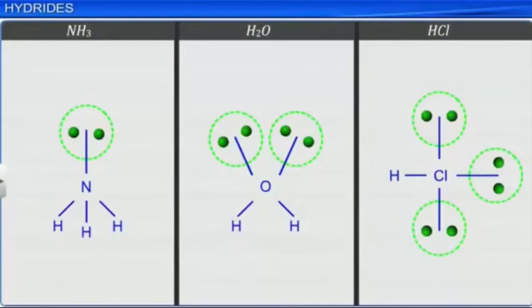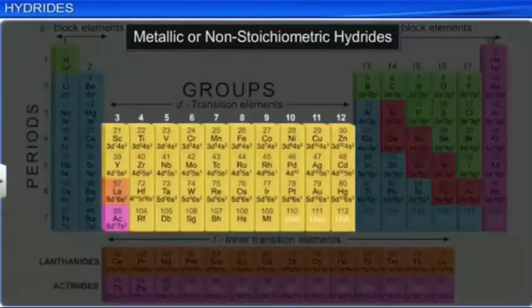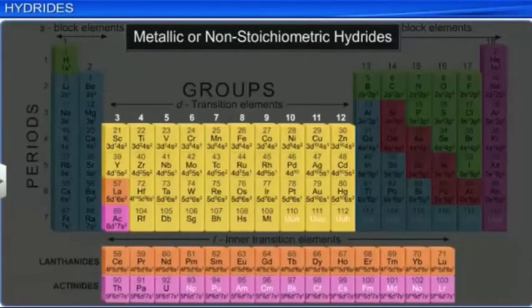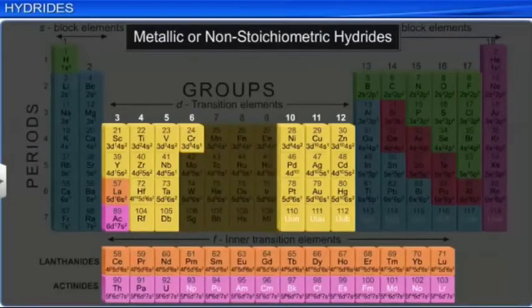The third type of hydrides are metallic hydrides. They are binary compounds of hydrogen with d and f block elements. However, except for chromium from group 6, the metals of group 6, 7, 8, and 9 do not form hydrides. The inability of these metals to form hydrides is called the hydride gap of d-block.